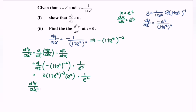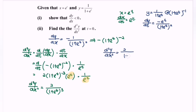So for the second derivative, we will have 2 over 1 plus e to the power of t to the power of 3, as we already simplified this part. So the second derivative is equal to 2 over 1 plus e to the power of t, to the power of 3.